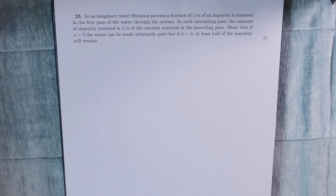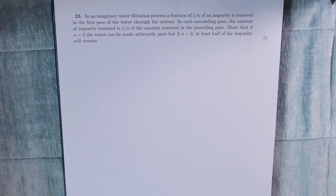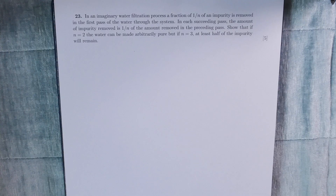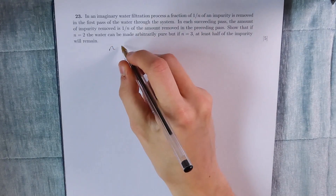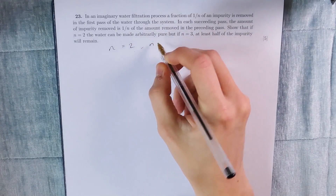In an imaginary water filtration process, a fraction of 1 over n of an impurity is removed in the first pass of the water through the system. In each succeeding pass, the amount of impurity removed is 1 over n of the amount removed in the preceding pass. Show that if n is equal to 2, the water can be made arbitrarily pure, but if n is equal to 3, then at least half of the impurity will remain. We're only really considering two cases here: n equals 2 and n equals 3.